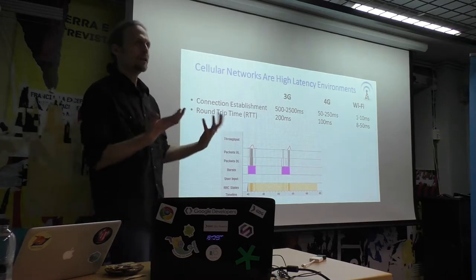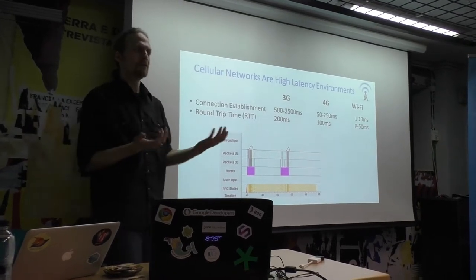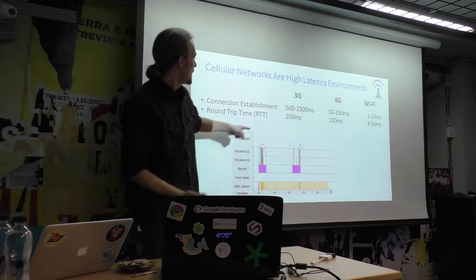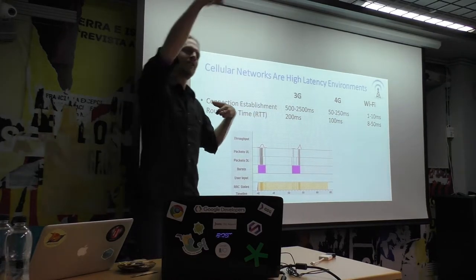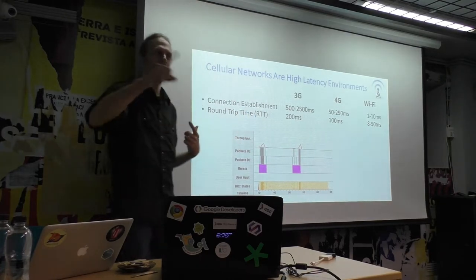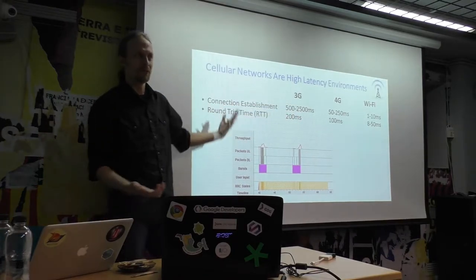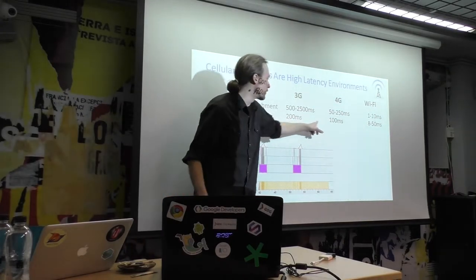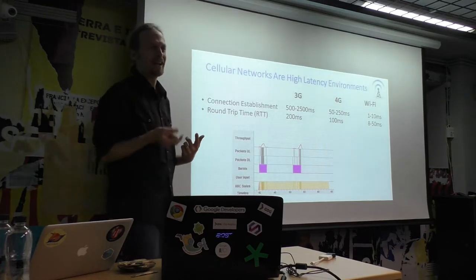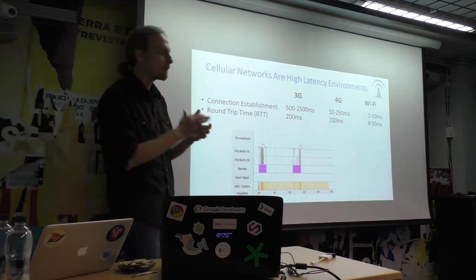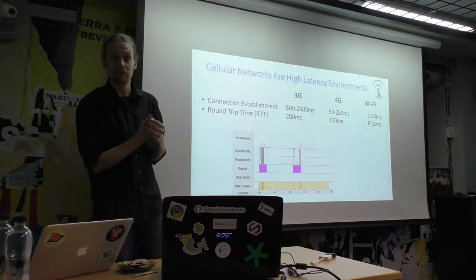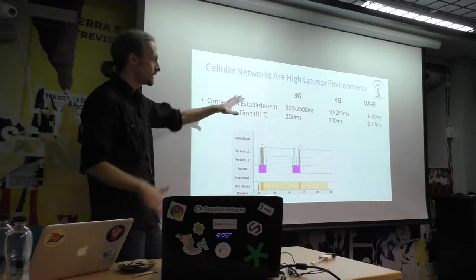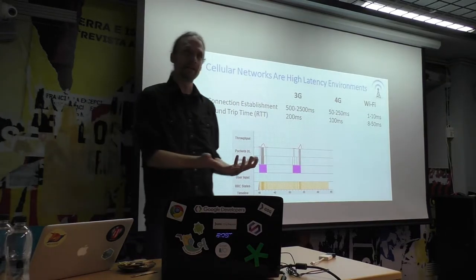One of the problems is cellular networks are high latency. If you're reading an article and click a link, it may take a second before the phone does anything — because it takes time for the phone to talk to the tower to establish a connection before packets can even go. On 3G, it can be up to two and a half seconds. There's also a much larger round-trip time because of all the infrastructure through towers and backhaul. People on Wi-Fi don't see this high latency, but on cellular they will.